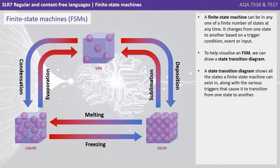A finite state machine can be in any one of a finite number of states at a given time. It changes from one state to another based on a trigger condition, an event or an input.